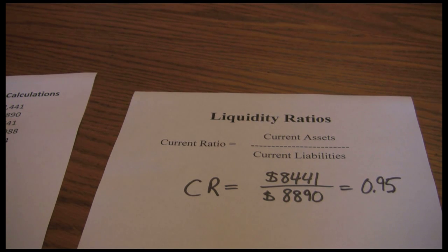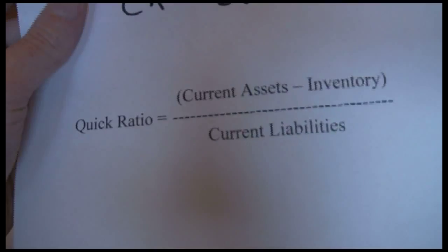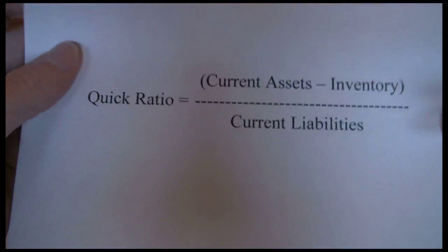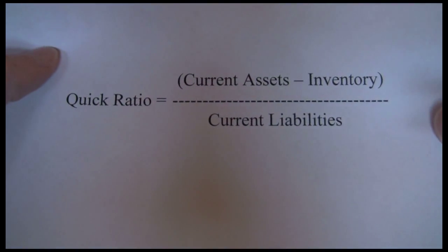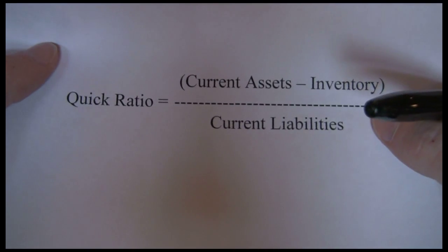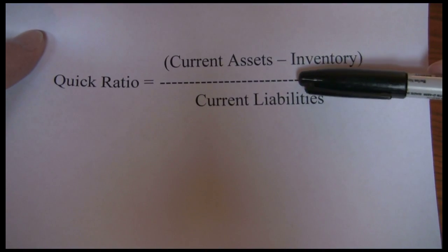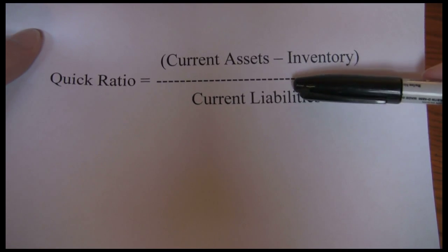Also, Coca-Cola's cash flows from income are very predictable, so they don't need to keep a cushion to protect themselves. The quick ratio is another measure of liquidity. Here, we pull out inventory. The idea is that inventory is the least liquid of our current assets and takes the longest to convert to cash.